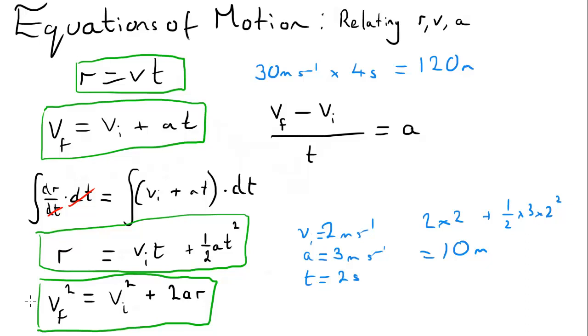And some people may call these the SUVAT equations, because they use different letters for different things, like S is for distance, U is for initial velocity, and everything. But I use these letters because it makes more sense and it's not confusing.